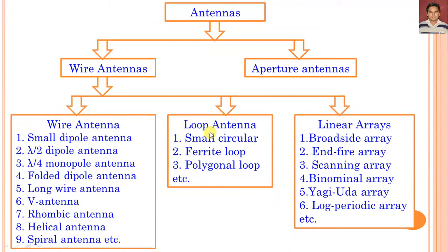The loop antenna can be categorized as small circular, ferrite loop, polygon loops, or any other shape of loop antenna. In the linear array form, we can categorize broadside, end-fire, scanning array, phased array, binomial array, Yagi-Uda array, log-periodic, or combinations of them.